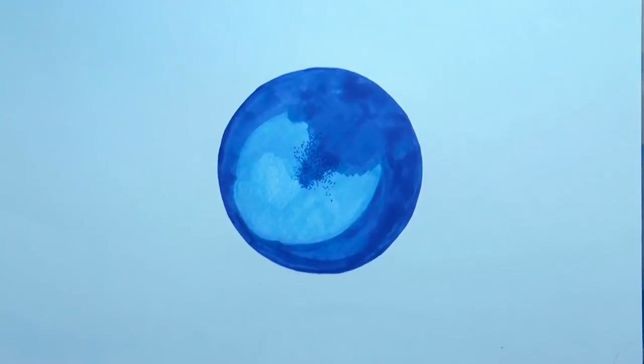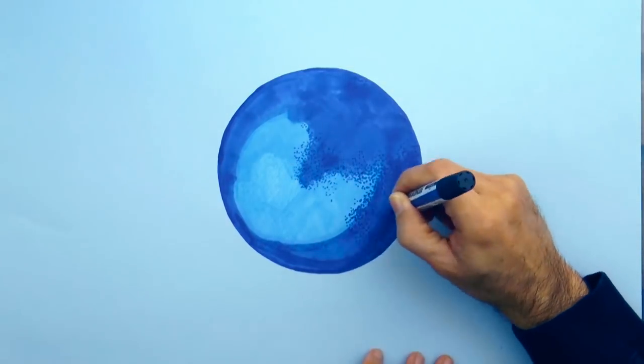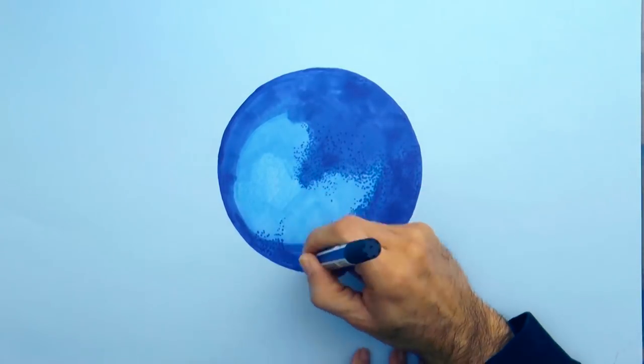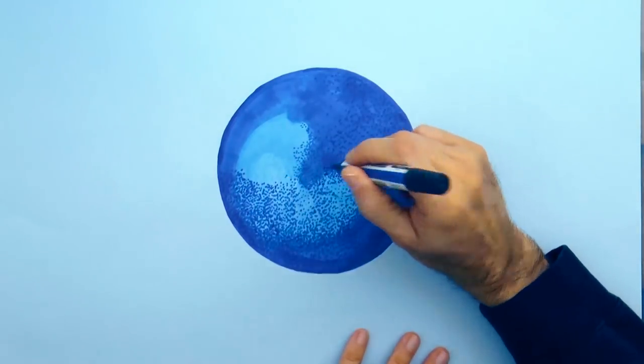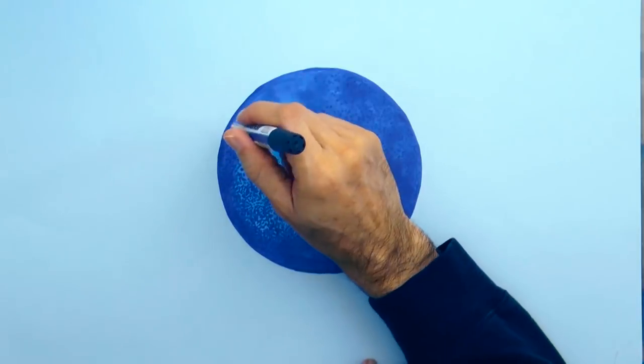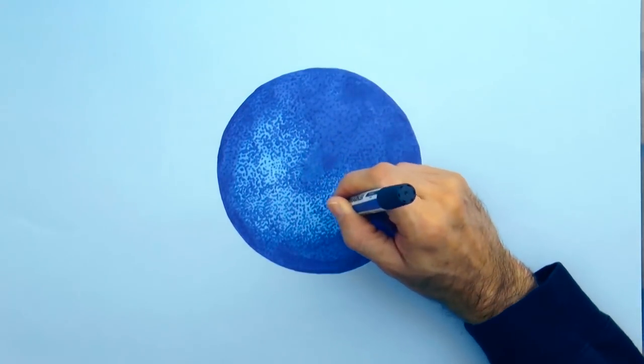Now to begin giving the texture, we make many dots with a blue marker. With this also we soften the line between the dark and light blue. We fill it in a lot. And we make more dots.